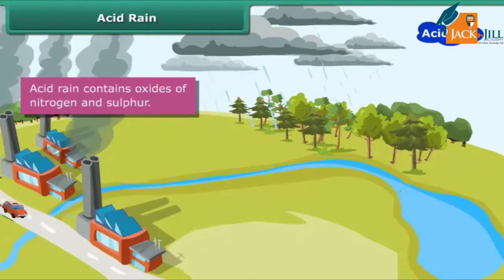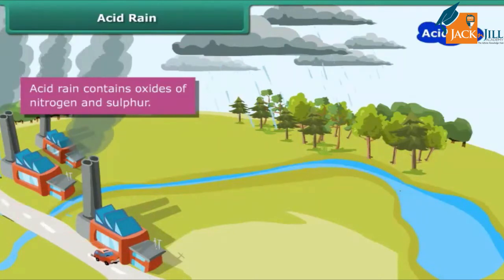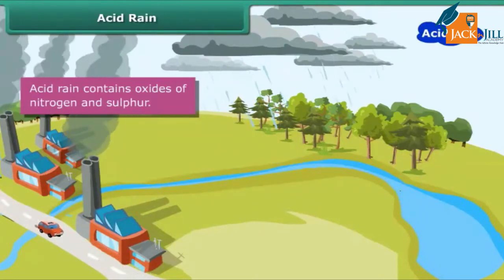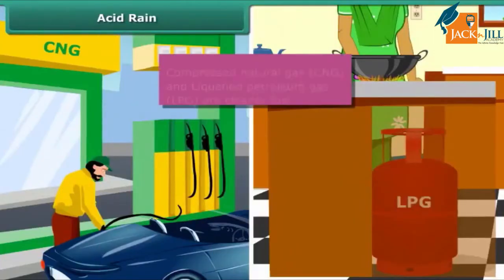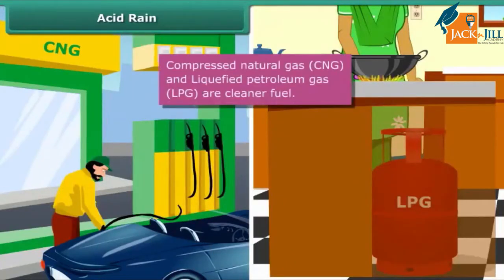To reduce acid rain, the use of clean fuels like compressed natural gas (CNG) and liquefied petroleum gas (LPG) can reduce the acidity of rain.